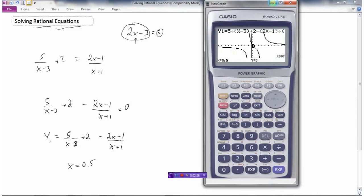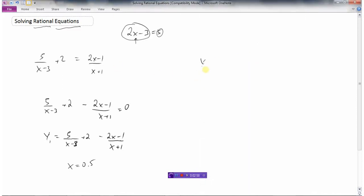The other way that we could do this one is we could make y1 equal to the left side, and let's make y2 equal to the right side.